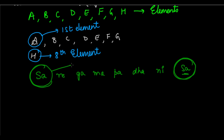They are the same. Sa, Re, Ga, Ma, Pa, Dha, Ni, Sa — Sa is the eighth note and Sa is also the first note. So you can see that the first and the eighth note are the same. Comparing this eighth element repetitive property to the first element with the musical notes, Newlands formed a law which he called the Law of Octaves.